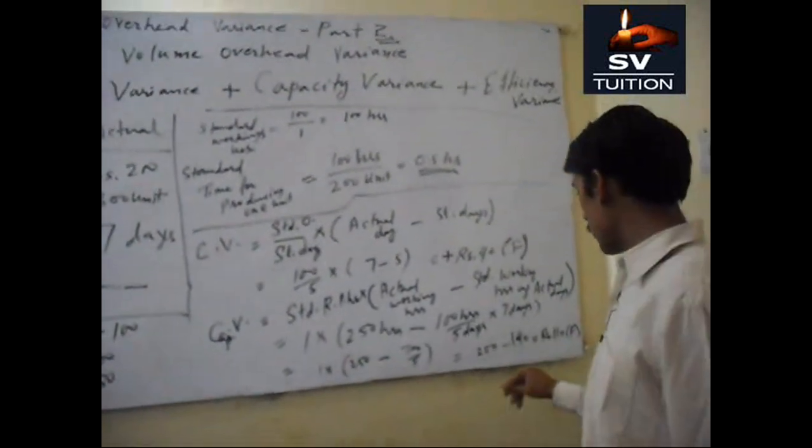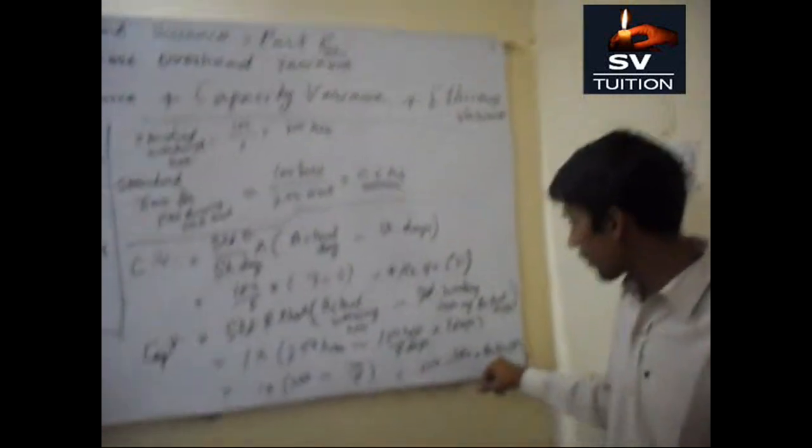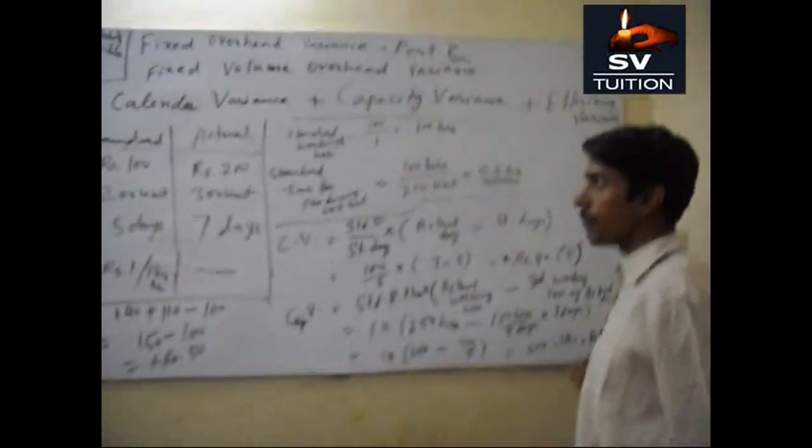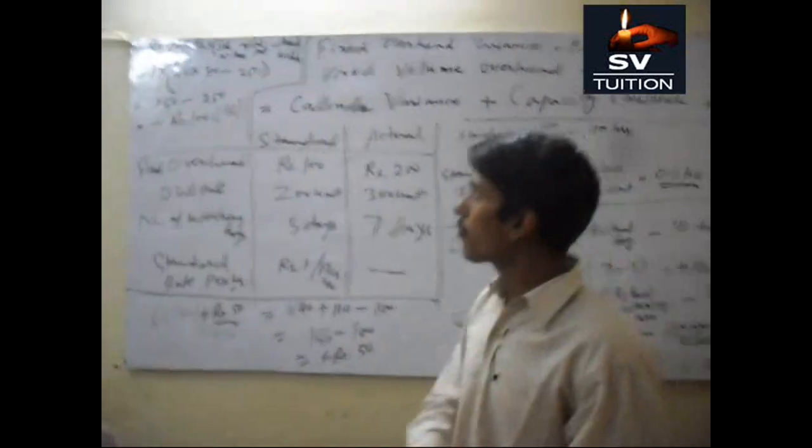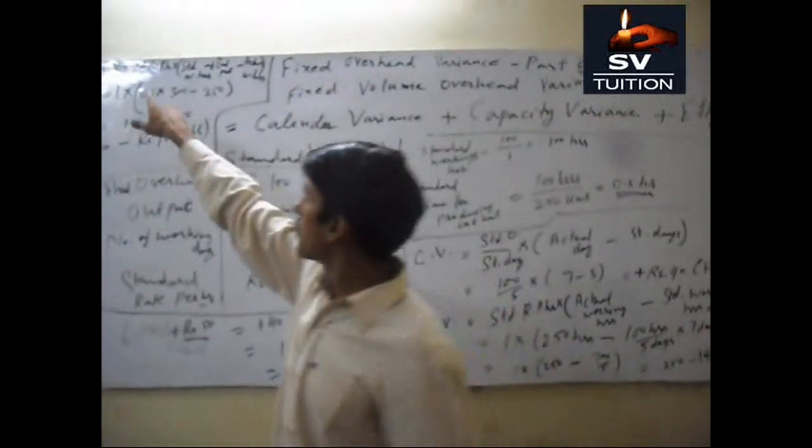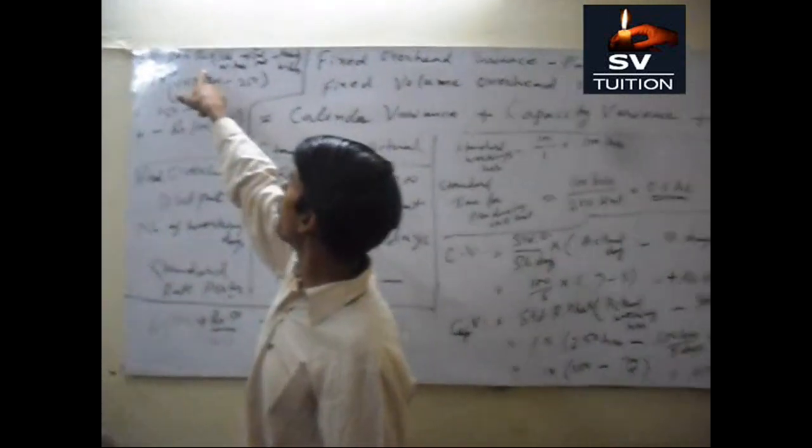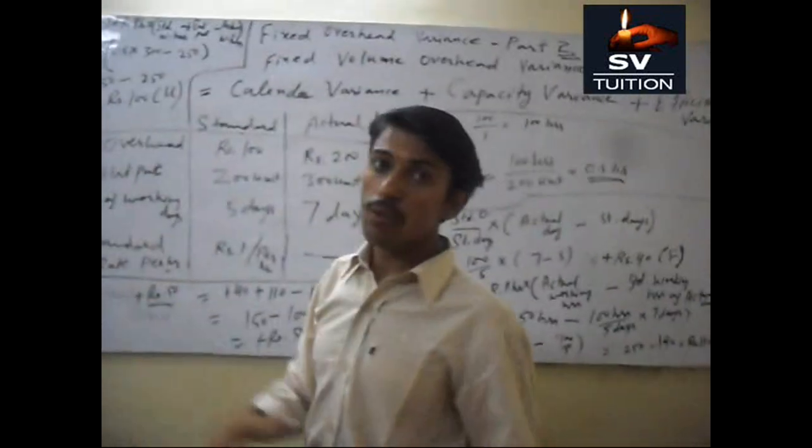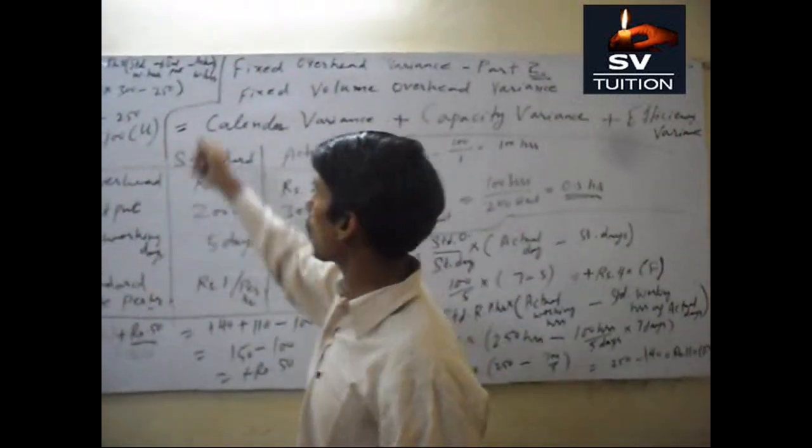After calculating this we will find 110. This is favorable. Now in the last we will calculate efficiency variance. This is the standard rate per hour into standard working hours of actual output minus actual working hours.